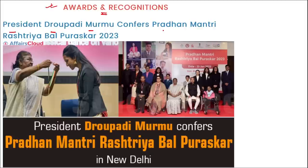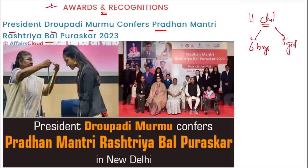President Droupadi Murmu conferred the Pradhan Mantri Rashtriya Bal Puraskar for 2023, awarded to 11 children for exceptional achievement at Vigyan Bhavan in New Delhi. The awardees are from 11 states and union territories, including 6 boys and 5 girls. Each awardee receives a certificate, a cash prize of 1 lakh rupees, and a medal. During the ceremony, Smriti Irani released a book titled 'Young Heroes of India,' with the first copy presented to the President.